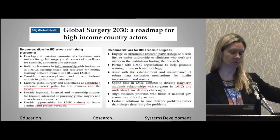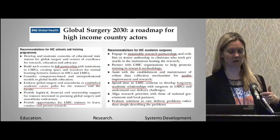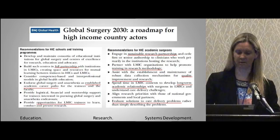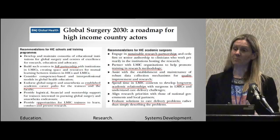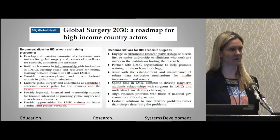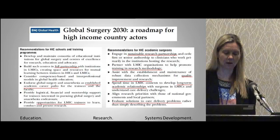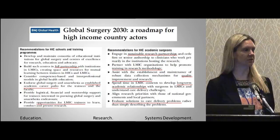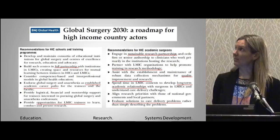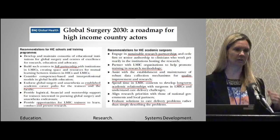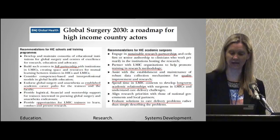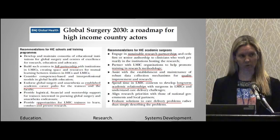For our centers, they say you should have your center in full partnership with an institution in a low- and middle-income country. People interested in this should be able to have a career in global surgery as their academic focus. We need to provide opportunities for trainees in lower- and middle-income countries to learn, conduct research, and present research — giving them the same opportunities our own residents have. For academic surgeons, we need sustainable research partnerships where we don't just go over and take all the interesting data — we have to give them the opportunity to present their own work.